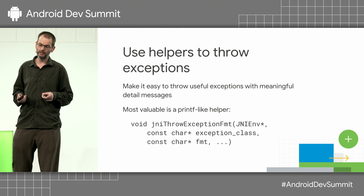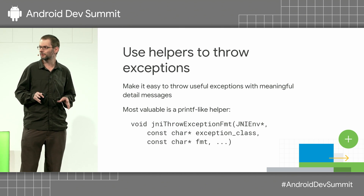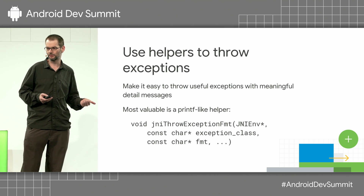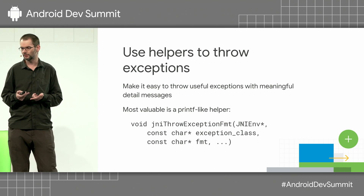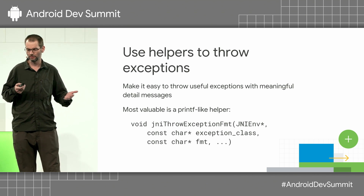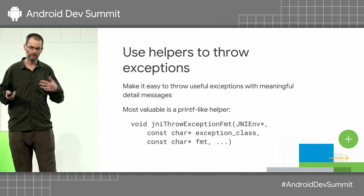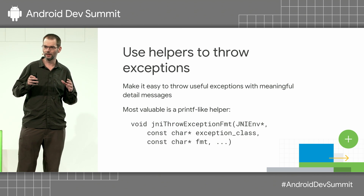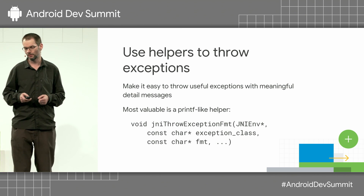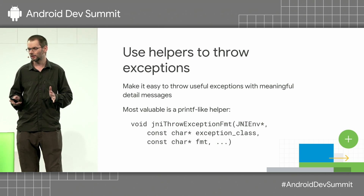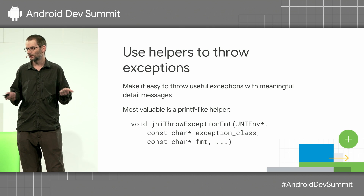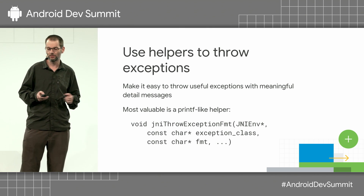Exceptions — harder than they look. The raw primitives you get in JNI are not super useful. They expect you to find the class yourself, create an instance. If you want to include a proper detail message or a cause, you end up doing weird things like: I need to find the constructor for this exception, and then I need to invoke the constructor — it's a lot of code, especially if you deal with the special cases. So having a function that just takes a printf-style format string is a huge relief.